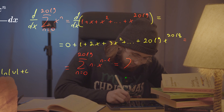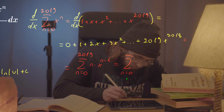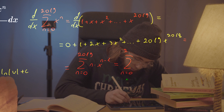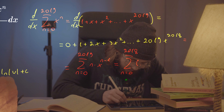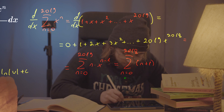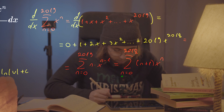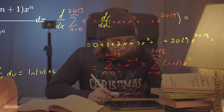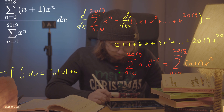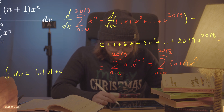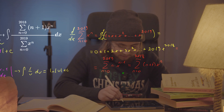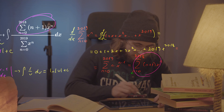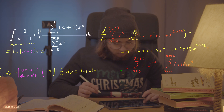After the index shift, I get the sum as n goes from 0 to 2018 of n plus one times x to the power of n. But this is exactly the same expression we have in the numerator of our power series quotient.